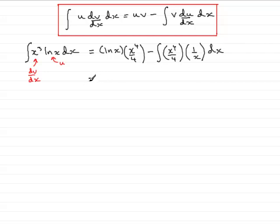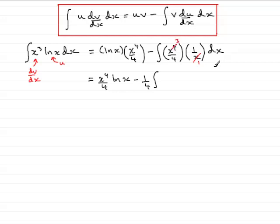Tidying up the first term, we have x to the power 4 over 4 times the natural log of x. Then tidying up the integral, we can pull the quarter out the front of the integral, and notice that we can simplify by cancelling that x with one of the x's in here, leaving us with x cubed. So we get a quarter times the integral of x cubed with respect to x.